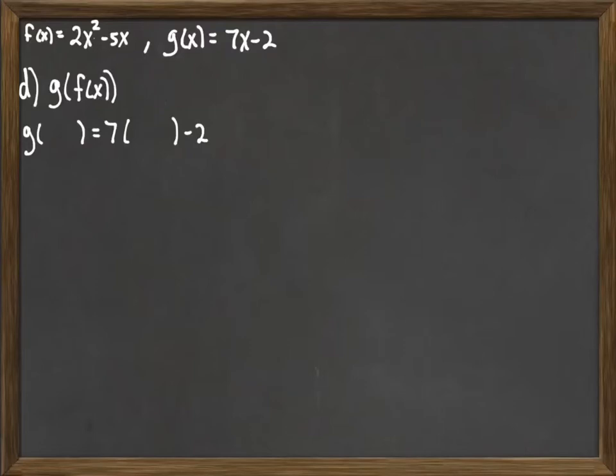g is the function 7x minus 2. So it's going to take whatever you give it, multiply it by 7, and then subtract 2. So g of blank equals 7 times blank minus 2.